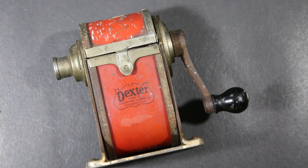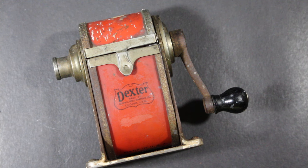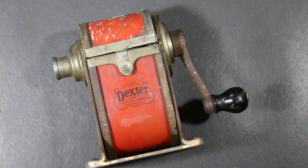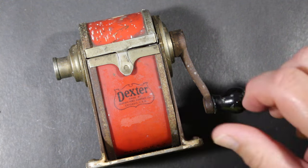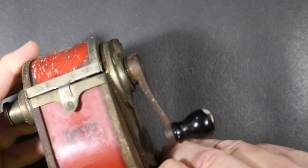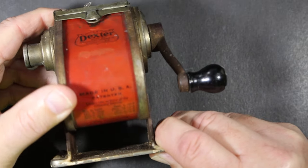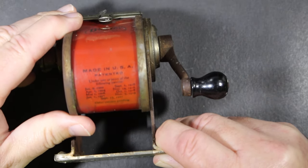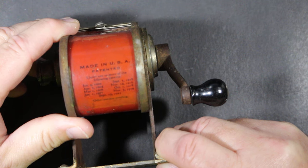This is a Dexter pencil sharpener and it is made by the Automatic Pencil Sharpener Company of Chicago, Illinois, USA. And I am not quite sure of the era that it's from, but a little research said that it might be from the 1920s.